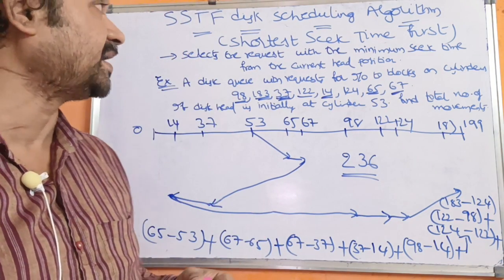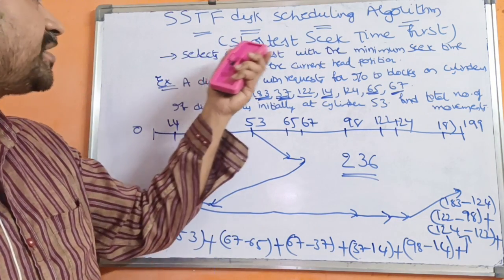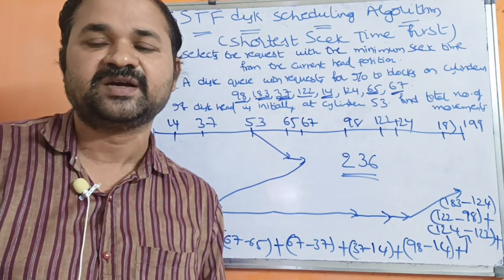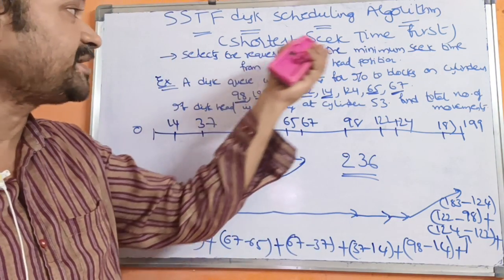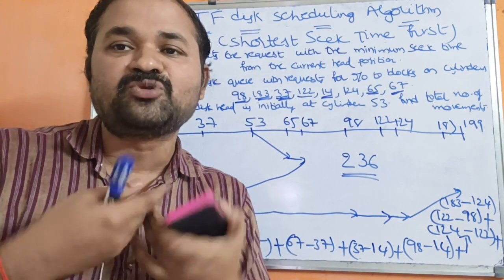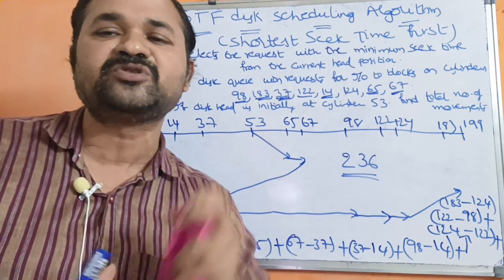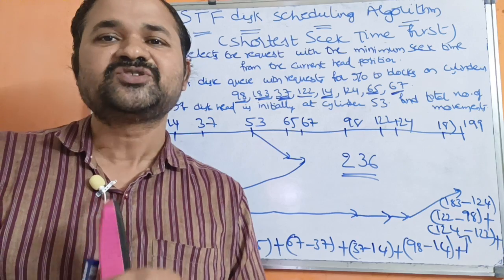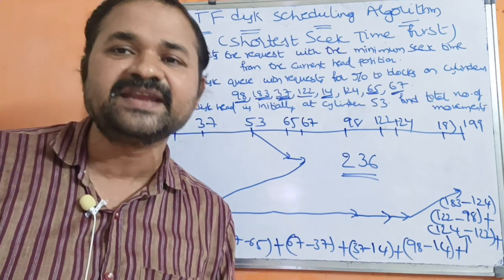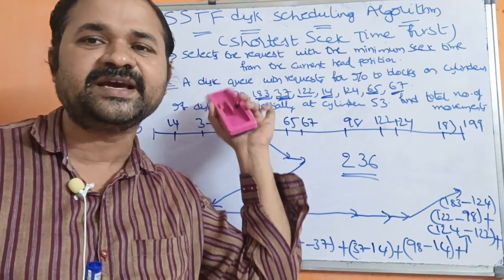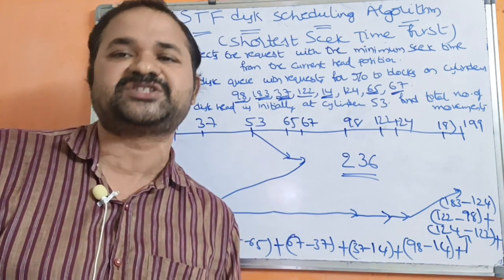This is the SSTF disk scheduling algorithm — Shortest Seek Time First. From the current head position, we always select the request with the minimum seek time. SSTF is better than FCFS scheduling because it requires only a minimum number of head movements.